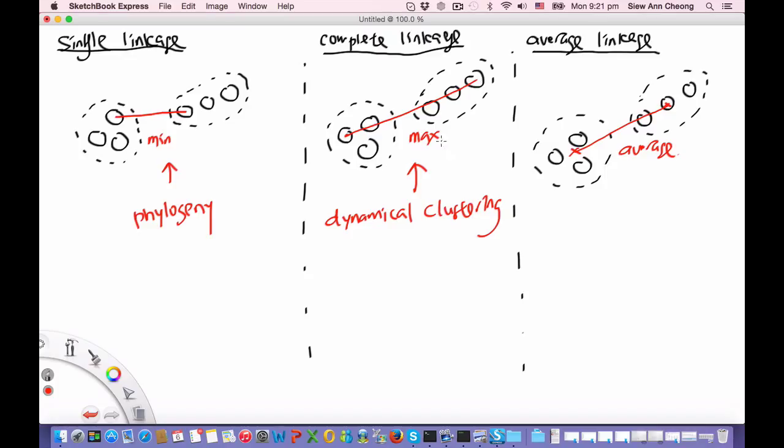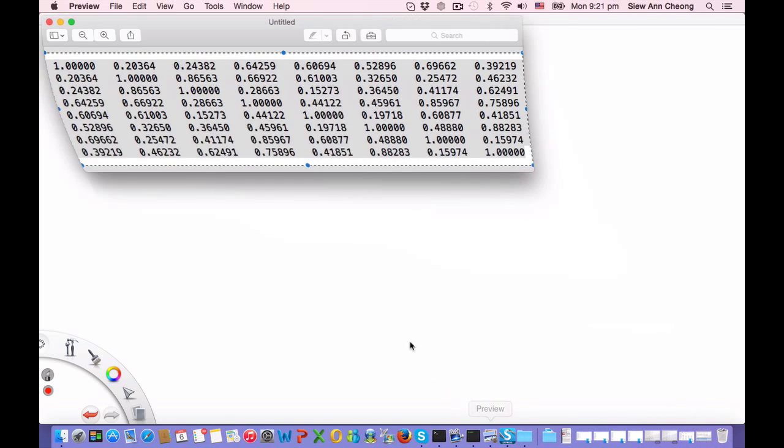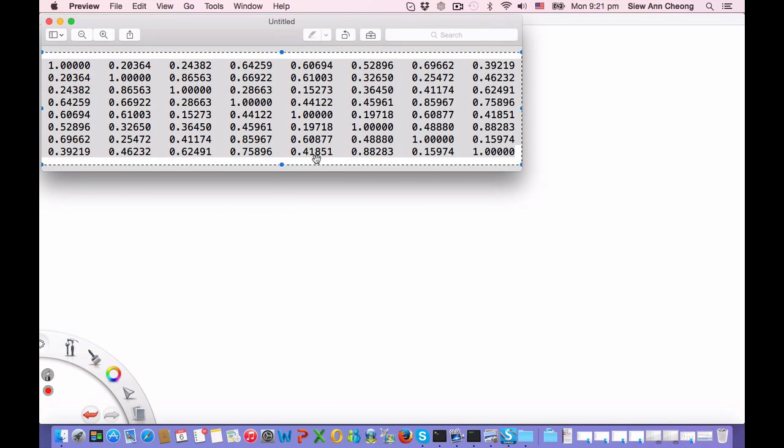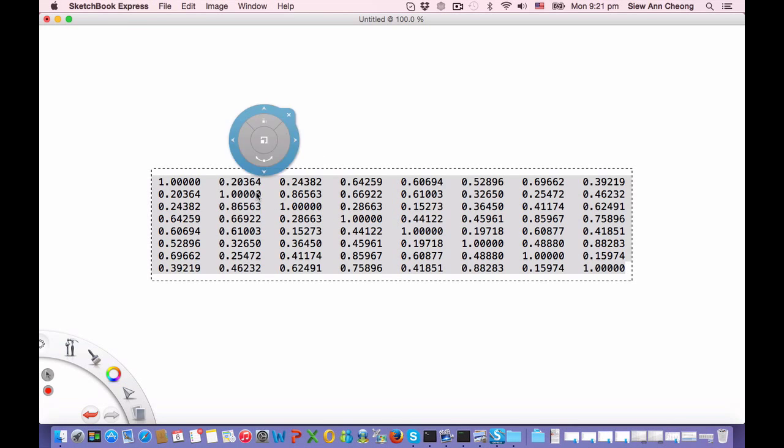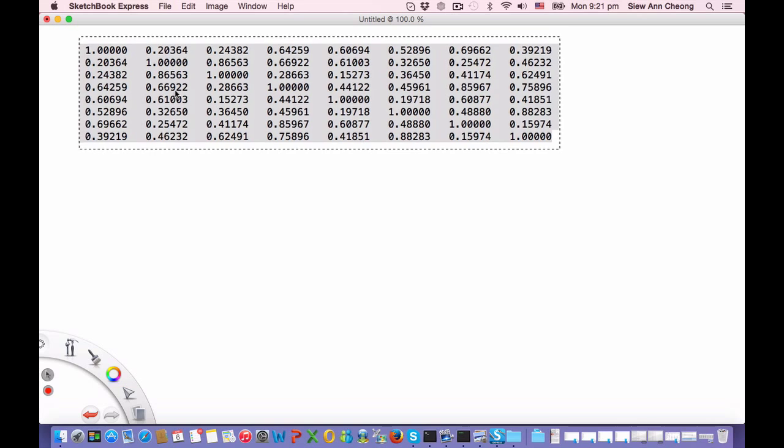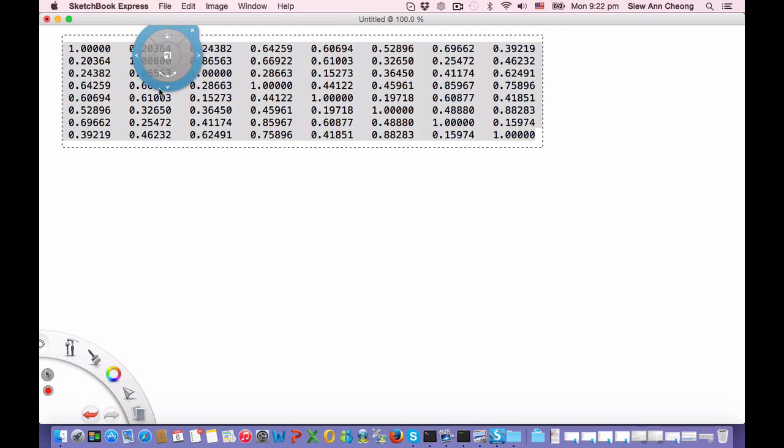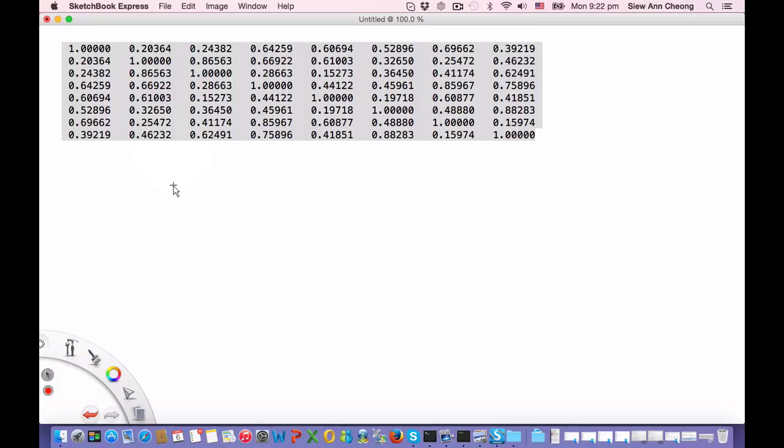Now let's see how the clustering works in practice by using the same example that we have used so far. So let's copy this example and paste it here. Let's move it over to one side so that we can draw the dendrogram. And let me just get rid of the diagonal and consider only the upper triangular matrix elements.